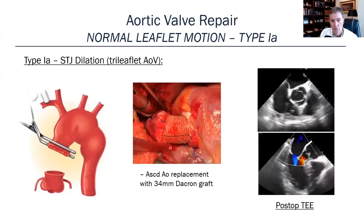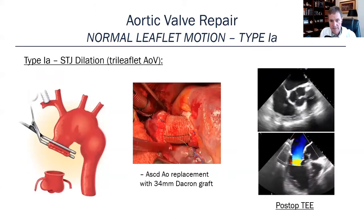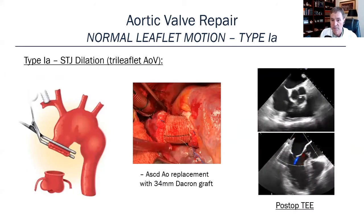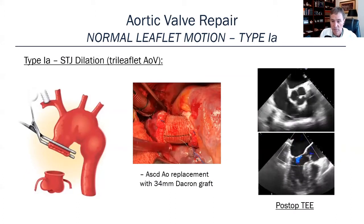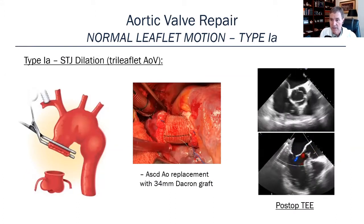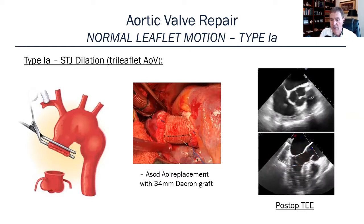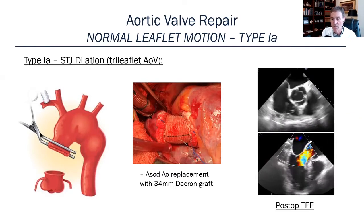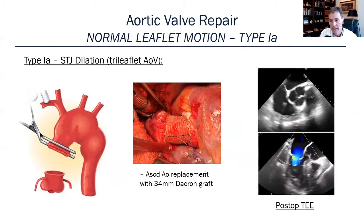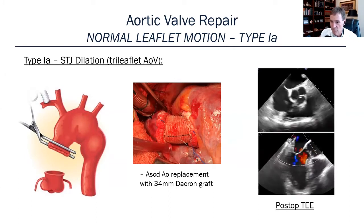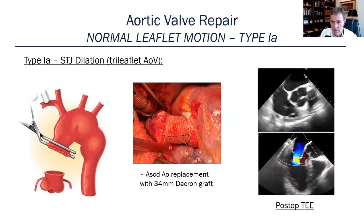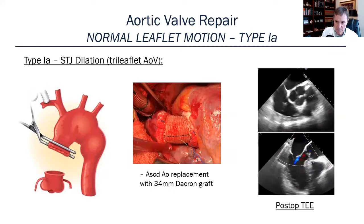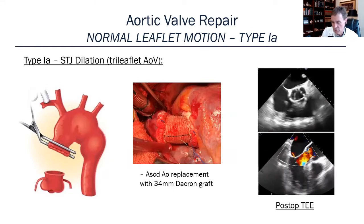In this patient, we did ascending aortic replacement only with a 34-millimeter Dacron graft, and we were able to pull the sinotubular junction back to normal anatomy. There was no involvement of the root. You can see on the postoperative TEE there is now good coaptation with no regurgitation.